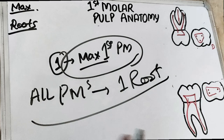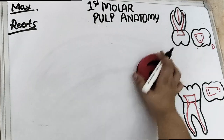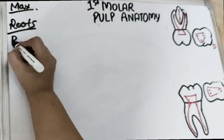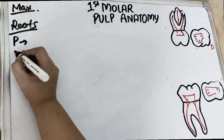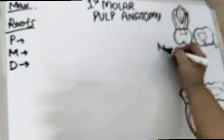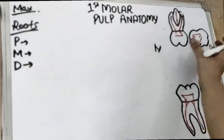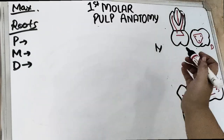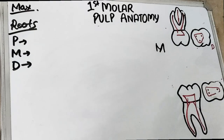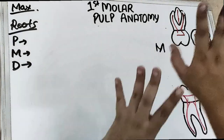Maxilla usually has exceptional teeth. The maxillary first molar has three roots: the palatal root, which is the longest, then the mesial root and the distal root. Mesial is towards the midline — M for midline, M for mesial. What is away from the midline is distal — D for distal, D for distant.